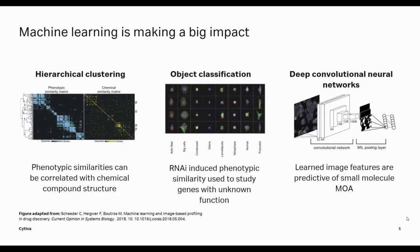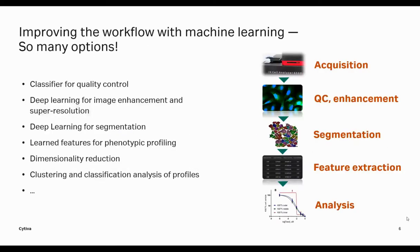Example three uses deep convolutional neural networks — a form of machine learning that has the advantage, especially with images, that it learns the features that are most important. There are many different places where people are using different types of machine learning methods to improve different steps in the high content screening workflow.